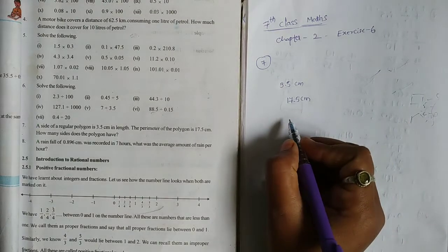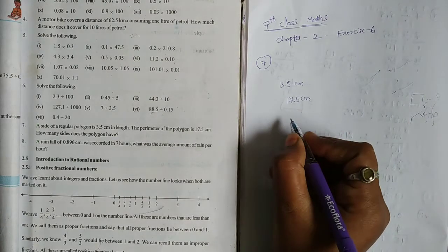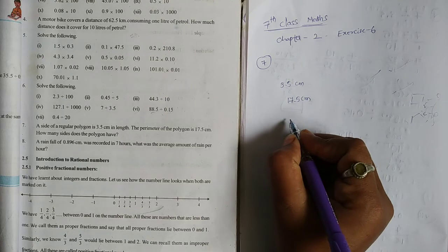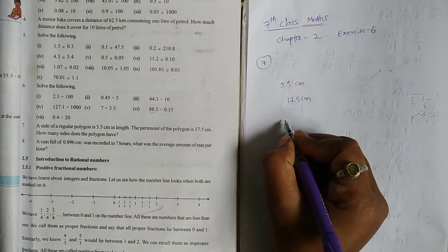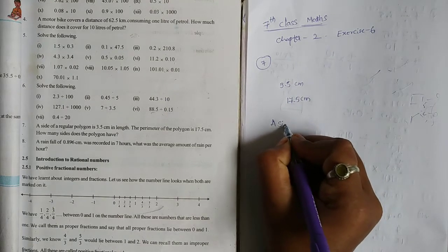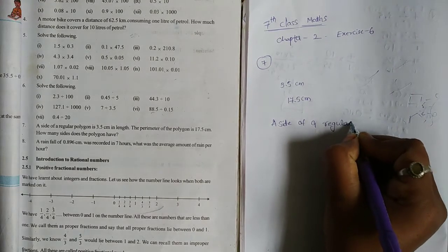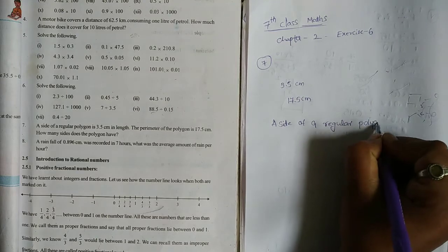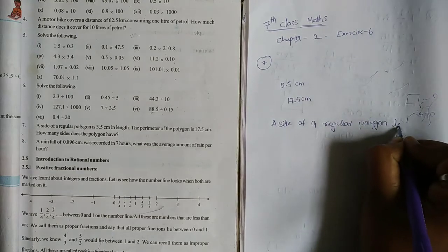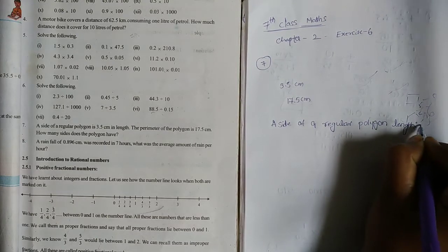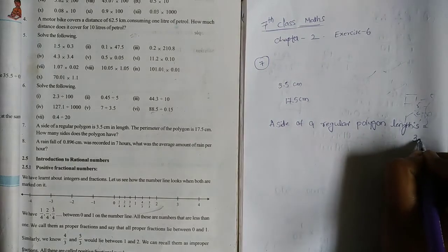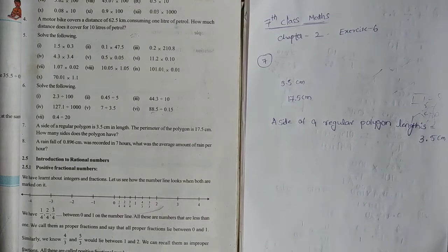This is a working problem. We have to work. Now, here we go. A side of a regular polygon's length is 3.5 cm.